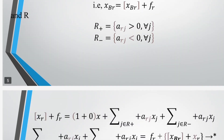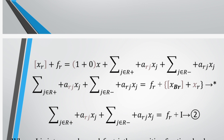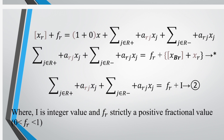Rewriting the equation: Xbr plus Ffxr equal to (1 + 0)·Xfxr plus summation over j in R+ of Arj·Xj plus summation over j in R- of Arj·Xj. That is, summation j in R+ of Arj·Xj plus summation j in R- of Arj·Xj equal to Ffxr plus Xbr minus Xfxr. Then summation j in R+ of Arj·Xj plus summation j in R- of Arj·Xj equal to f_sub_xr plus i. This is equation 2, where i is the integer value and f_sub_xr is strictly a positive fractional value. Then 0 less than f_sub_xr less than 1.